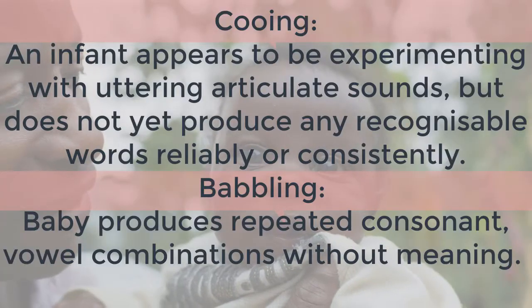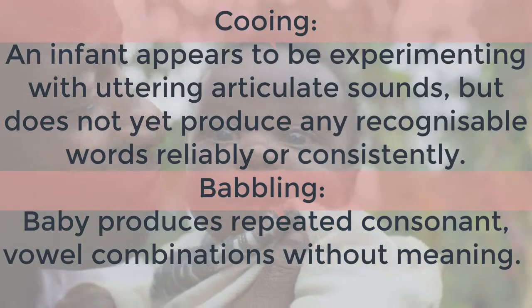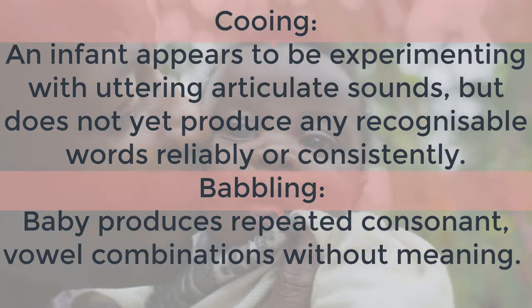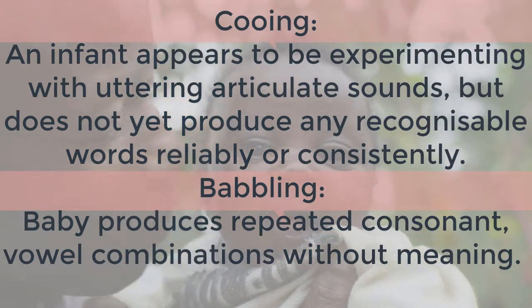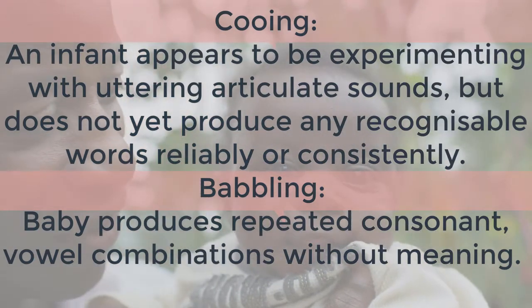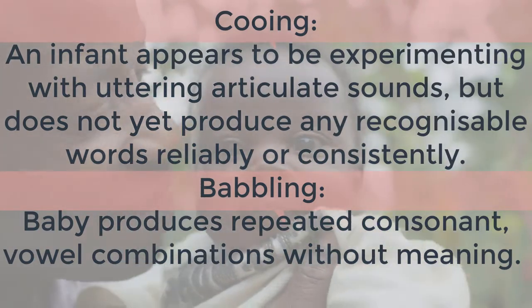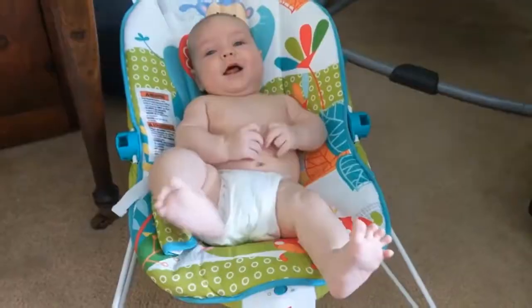At the cooing phase, children are making sounds with their mouths. At the babbling phase, they're replicating consonant-vowel combinations like ba-ba, ka-ka.